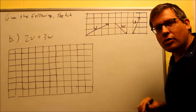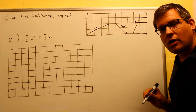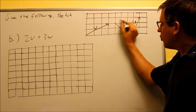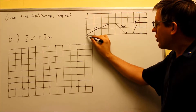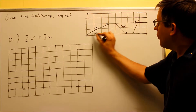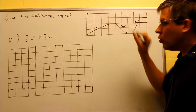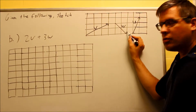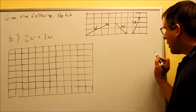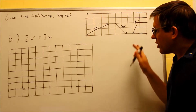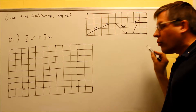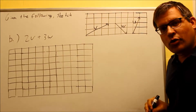Part B is 2V plus 3W. We're going to use the same given vectors as part A. If you want to draw 2V, you draw one V and then another one immediately afterwards. So you go over three, up two — then over three, up two again — and that whole long vector is 2V. For 3W, here's one W: down two, over two. Then down two, over two, and down two, over two again — you'd have a big long one representing 3W. Then we just add them together tip to tail.